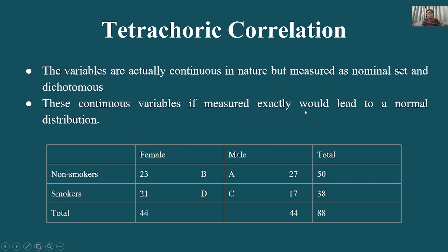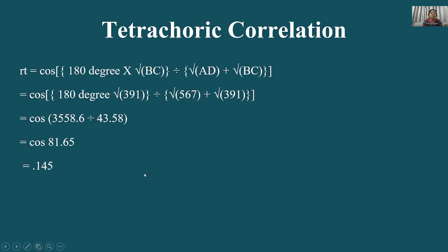ये दो points tetrachoric के लिए हैं: variable continuous होना चाहिए, nominal scale में होना चाहिए, और normal distribution को follow करना चाहिए। Female/male — natural dichotomy है; non-smokers/smokers — artificial dichotomy है। Formula के लिए: R(TET) = cos[180° × √BC / (√AD + √BC)] — इसमें trigonometry आ जाती है इसलिए formula से सवाल नहीं पूछा जाएगा।